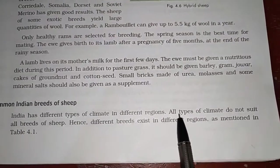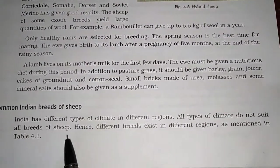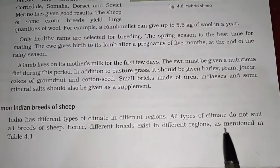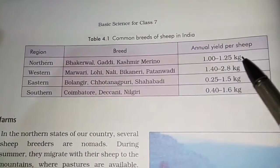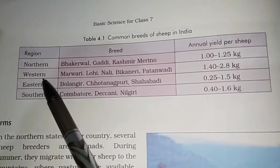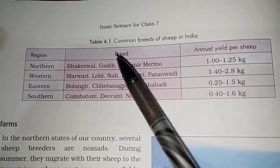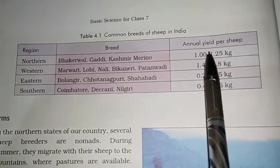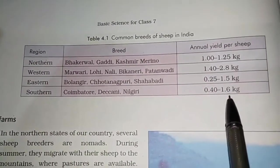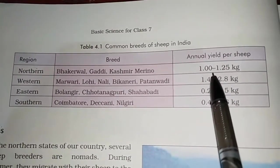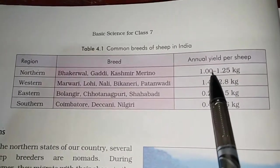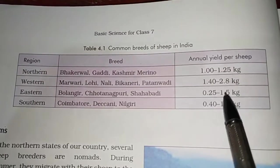India has different types of climate in different regions, so all climates do not suit all breeds of sheep. Hence different breeds exist in different regions, as shown in the table. Different varieties of sheep are found in northern, western, eastern, and southern regions of India and they produce varying amounts of wool per year. The production of wool per year is very less in native sheep compared to exotic breeds like Rambouillet, which can produce up to 5.5 kg.